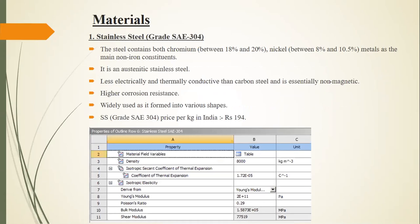Now let us talk about the materials used for analysis of the frontal axle. The first is stainless steel SAE 304. It has excellent resistance in atmospheric and corrosive environments, good weldability, and is widely used for various automobile parts. It can be formed into various shapes and sizes, has low carbon content, good thermal conductivity, and is non-magnetic.